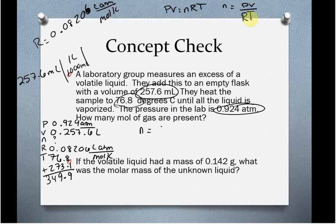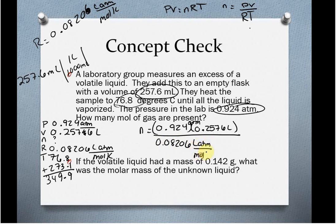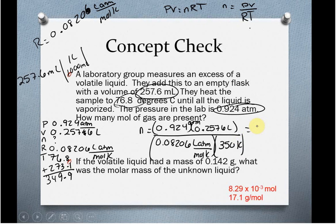Now we can plug everything in. So N is equal to PV over RT. So 0.924 atmospheres times our 0.2576 liters over 0.08206 liter atmospheres per mole Kelvin and 350 Kelvin. We plug that in. 0.924 times 0.2576 divided by 0.08206 and divided by 350 is going to give us something like 8.29 times 10 to the minus 3.